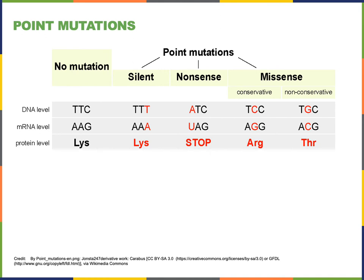While mutations are often bad — disrupting the function of proteins could potentially lead to disruption of the cell's function, kill the cell, or cause the cell to start dividing in an uncontrolled way which might cause cancer — some mutations create new functions that are helpful. This process of mutation is what enables the rich diversity of life on our planet and has enabled the mechanism of evolution by natural selection to produce the diversity of species alive today, all descending from a common ancestor.